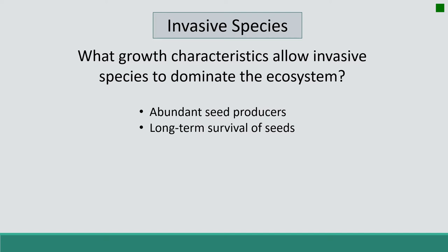Invasive species also have long-term survival of seeds. Leafy spurge, for example, can have a viable seed for up to eight years. Sagebrush, a species that we actually want, typically has a viable seed for only one to two years.